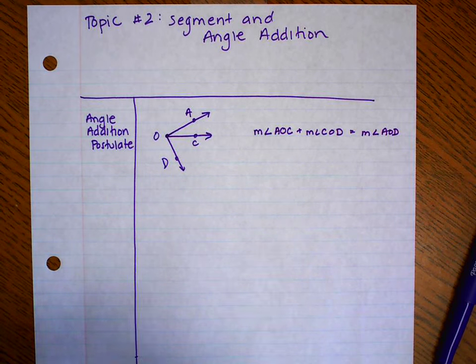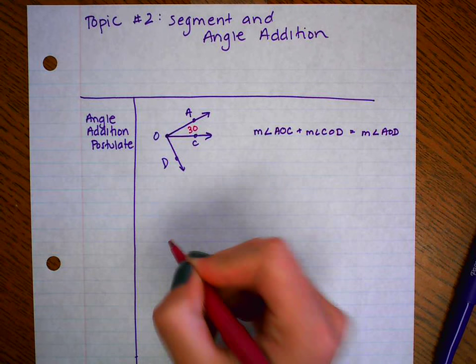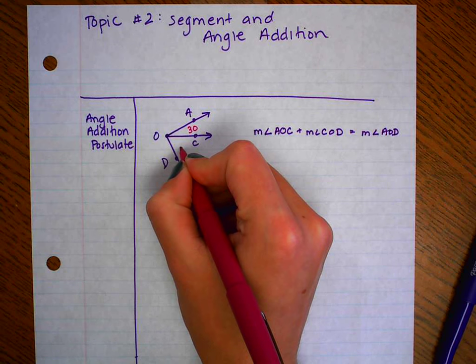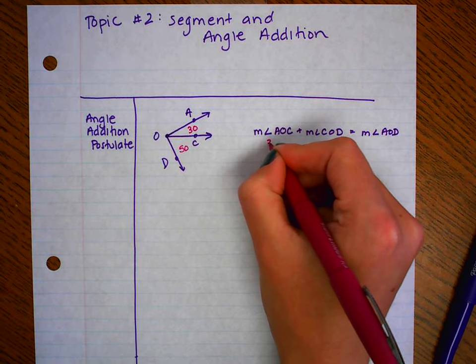So let's put some numbers in there really fast. For instance, if I said that this here had a measure of 30 degrees and this here had a measure of 50 degrees, then the measure of angle AOC, I would substitute in 30 degrees, the measure of angle COD would be 50 degrees.